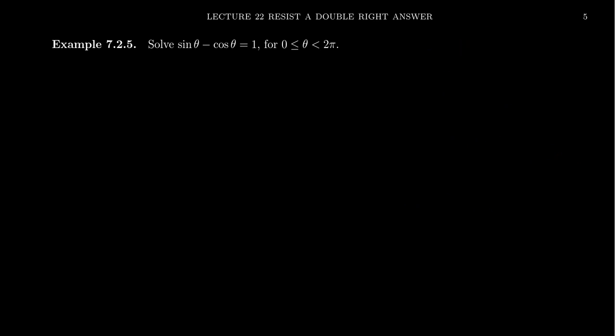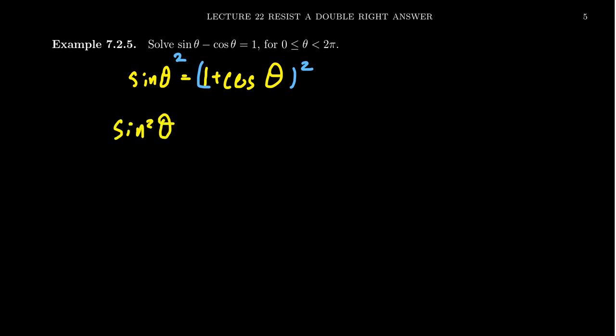We want to think about this in terms of sine and cosine as square roots. We isolate sine on the left, giving us sine theta equals one plus cosine theta on the other side. We then square the left-hand side — getting sine squared theta — and we have to do the same to the right-hand side. Foiling that out, we end up with one plus two cosine theta plus cosine squared theta.